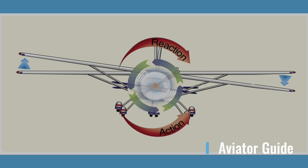Torque reaction involves Newton's third law of physics: for every action, there is an equal and opposite reaction. As applied to the aircraft, this means that as the internal engine parts and propeller are revolving in one direction, an equal force is trying to rotate the aircraft in the opposite direction. When the aircraft is airborne, this force acts around the longitudinal axis, tending to make the aircraft roll.